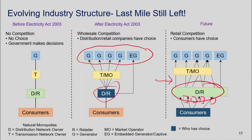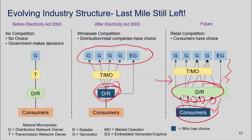We are going to potentially get competition in distribution as well, so consumers will then have a choice in terms of who they buy from and also who sells to them. At the moment the choice is only with the distribution companies. Essentially we've moved from full public monopoly to introducing the private sector and competition in generation, and the next stage is to bring in competition in distribution. We call this 'open access' — you have a choice of who you can buy from.